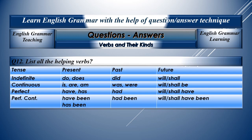Question number twelve: List all the helping verbs. Present definite: do, does. Past definite: did. Future definite: will or shall. Present continuous: is, are, am. Past continuous: was, were. Future continuous: will be, shall be. Present perfect: have or has. Past perfect: had. Future perfect: will have or shall have. Present perfect continuous: have been or has been. Past perfect continuous: had been. Future perfect continuous: will have been or shall have been. All these are helping verbs.